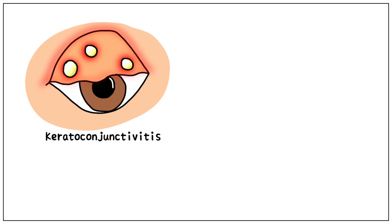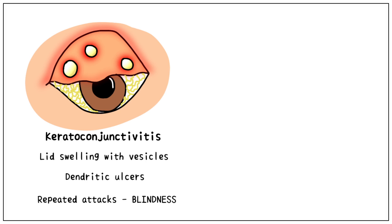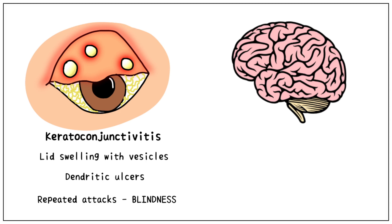Imagine these vesicles are bursting and forming ulcers that make you feel itchy. You pick on them and then rub your eyes — unknowingly, you have inoculated the herpes virus in your eyes, where it causes keratoconjunctivitis. This is characterized by lid swelling with vesicles. Eye examination reveals dendritic ulcers, repeated attacks of which could cause permanent blindness.